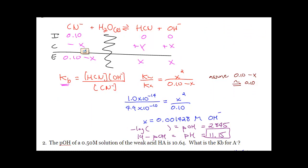So we've got KW over 4.9×10⁻¹⁰ — we got that from the chart, looking up CN- on the right side — equals X squared over 0.1. Rearrange, square root it, and we get X, remembering that X is OH-. Now we need to think back to section 4.11 and convert OH- into pH, which takes two steps: negative log of OH- gives a pOH of 2.845, and 14 minus pOH gives a pH of 11.15.